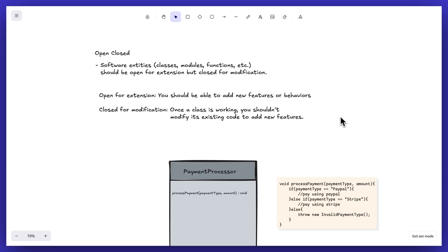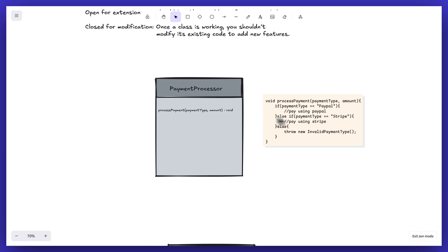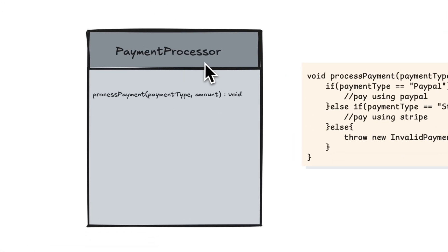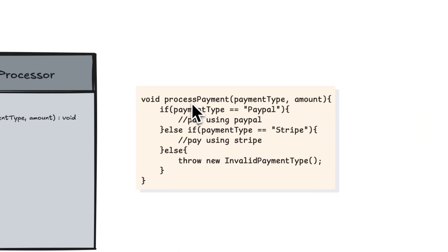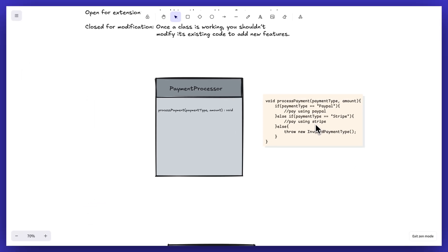Let's understand this with an example. We have a payment processor class which has one function called process payment, with arguments payment type and amount. Currently, if the payment type is PayPal then we pay using PayPal, and if it is Stripe then we pay using Stripe. But let's say in future I want to add a new payment gateway like Google Pay.